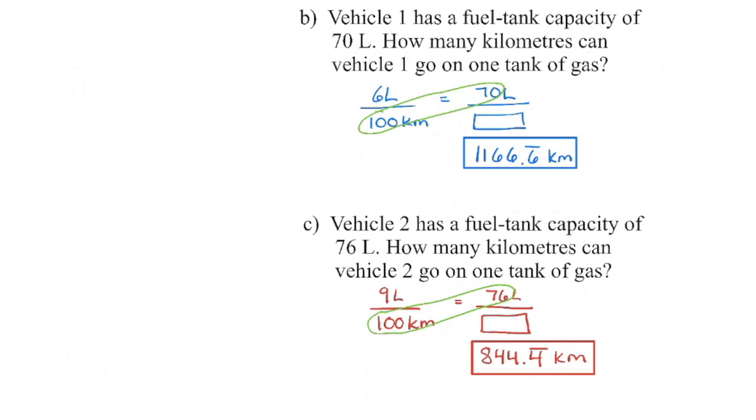Again, we can set up a proportion. These two fractions are equal or equivalent to one another. Put the same unit on the same line and then we can cross multiply. So multiply those two, divide by six, and we can see that we're going to get awfully far on vehicle one's tank of gas and we're still going to get pretty far on vehicle two's tank of gas.